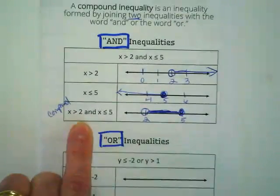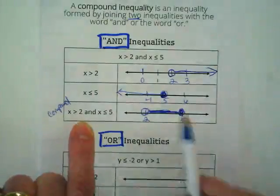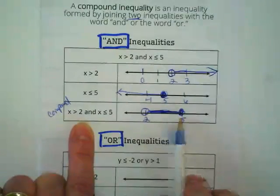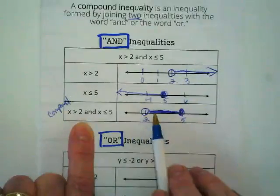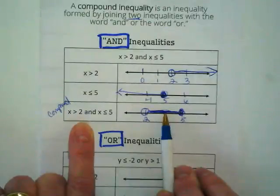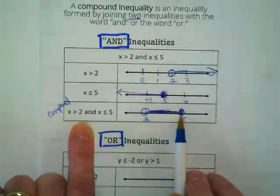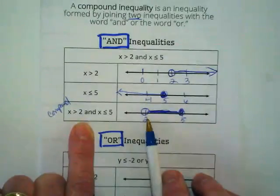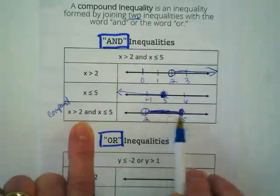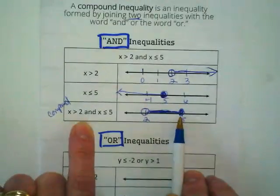X is greater than 2, so 2 doesn't count but 2.1 would, right? And it's less than or equal to 5. So I could put 2.1, 3, 4, 5.0. I meant to say 5.5 but that wouldn't work because it's bigger. 5 counts, 5 would make x true. 2 would not because it's not an equal to, but anything in between them, including 5, makes it work. Do you see how this is compound? Just like putting two words together, it's now one single line. This one makes the most sense to me.